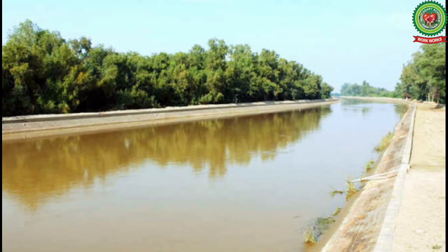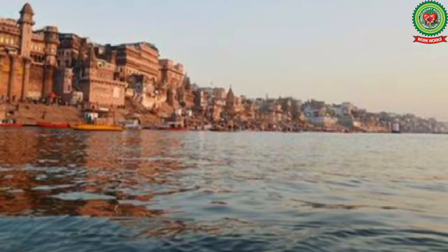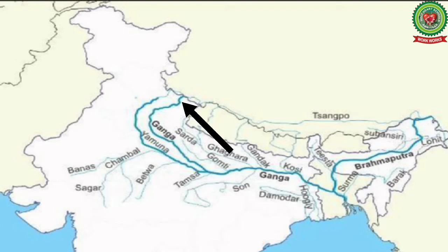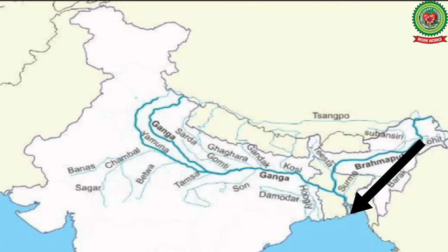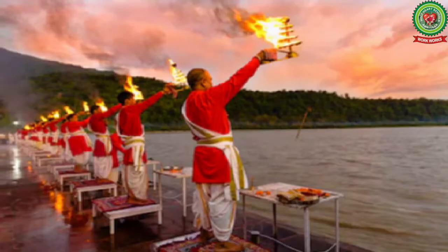Now let's move to the Ganga basin. River Ganga originates from the Gangotri glacier in Uttarakhand. The Ganga flows through India and Bangladesh and empties itself into the Bay of Bengal — unlike the Sutlej river, which empties into the Arabian Sea. The Ganga is a sacred river, worshipped as the goddess Ganga in Hinduism.